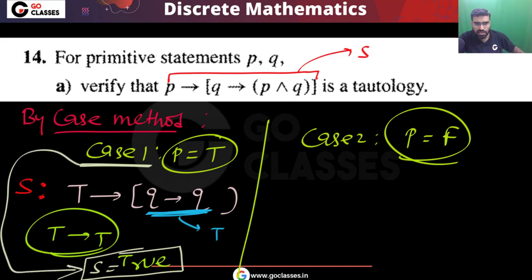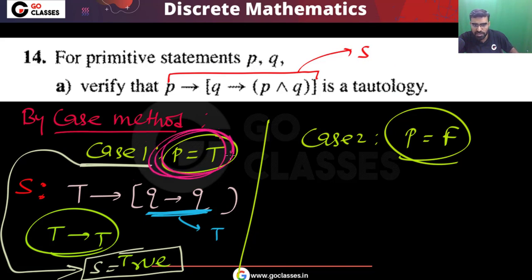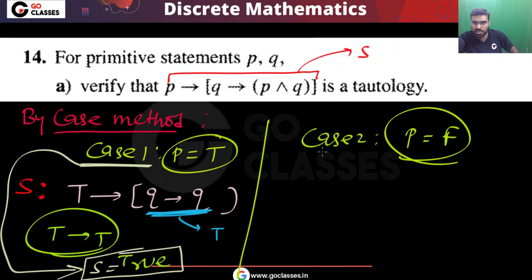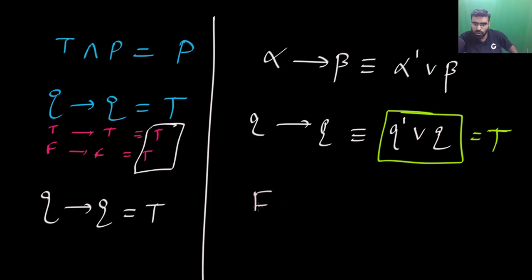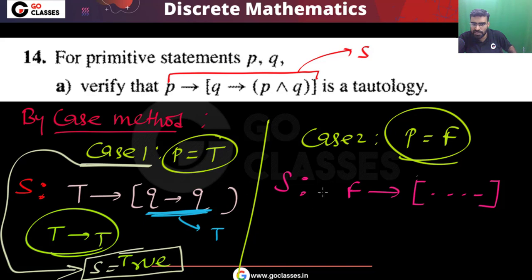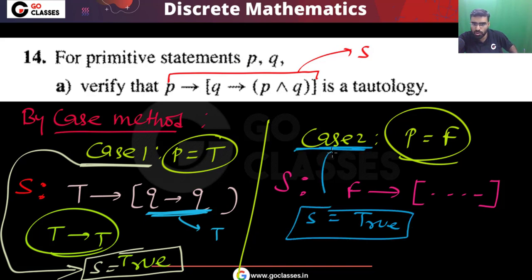Tautology means always true — in every case this S must be true. In case 2, when P is false: false implies anything is always true. So false implies (Q implies P∧Q) is true regardless of what follows. So S is true in case 2 as well.